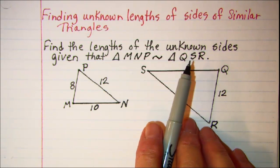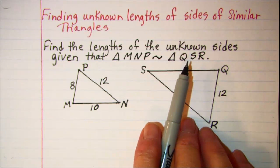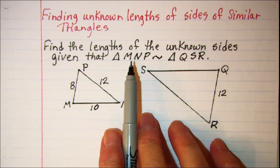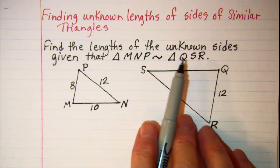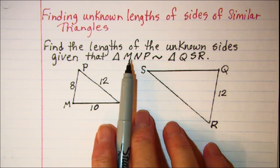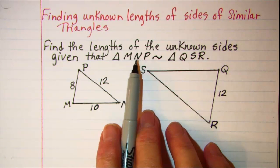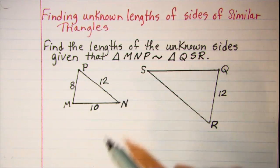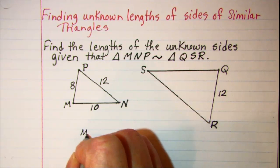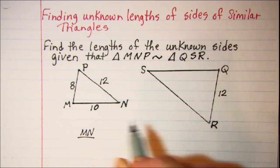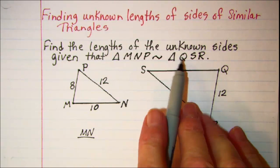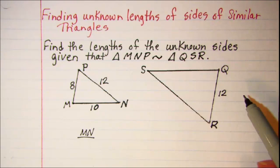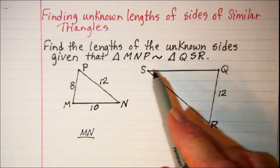Now when you're given a similarity statement like this, we can get a proportion for our sides just from the statement. So I can see that MN, which is the first two letters in this name of the triangle, is proportional to QS, which is the first two letters on this triangle representing this side right here.